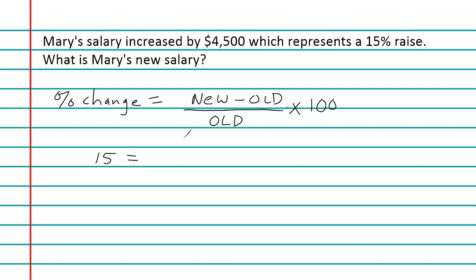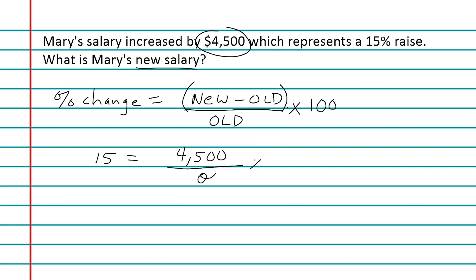We don't know the new salary — that's what we're looking for — and we don't know the old salary either. But we do know that whatever the new salary minus the old salary is, it equals 4,500. So we substitute 4,500 for that difference. We divide by whatever the old or original amount is, which I'll call 'o', and multiply by 100.